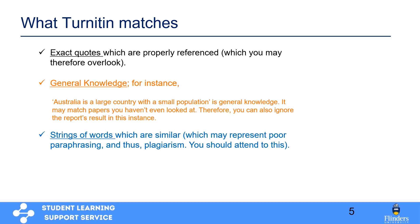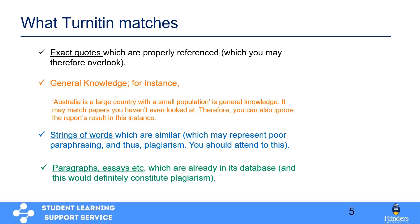However, sometimes you may find strings of words which are very similar to what others have written. In these cases, you need to be very careful and check to see if you have accidentally used too many words or catch phrases from a sentence you have read previously. In this case, you may want to consider paraphrasing it and using the correct in-text citations. Similarly, if you have used certain paragraphs or parts of an essay in your own writing and it gets flagged by Turnitin, you should have another look and consider paraphrasing it correctly.